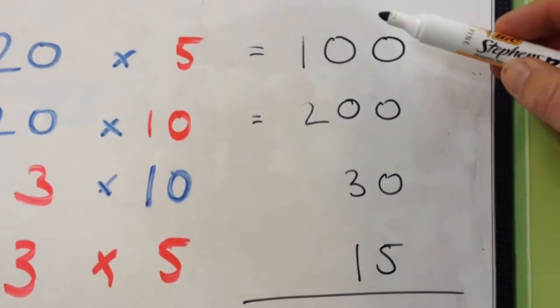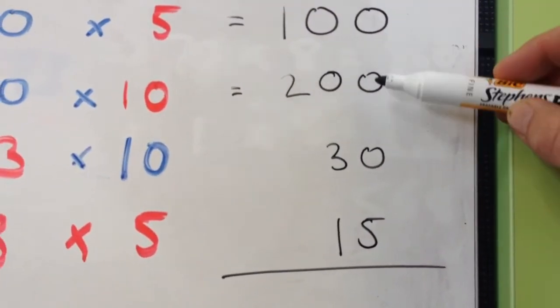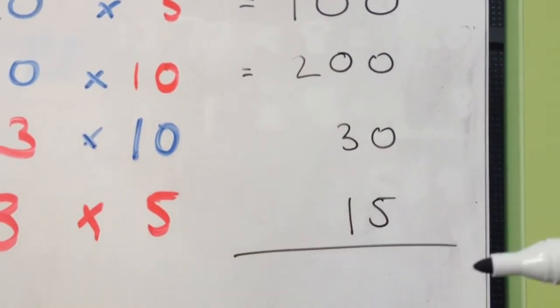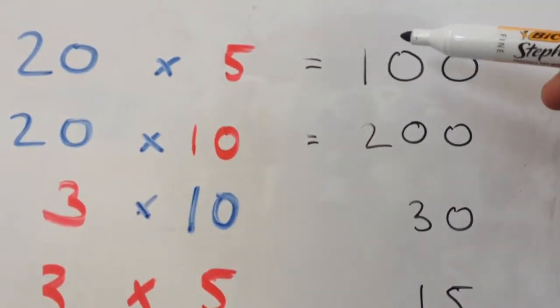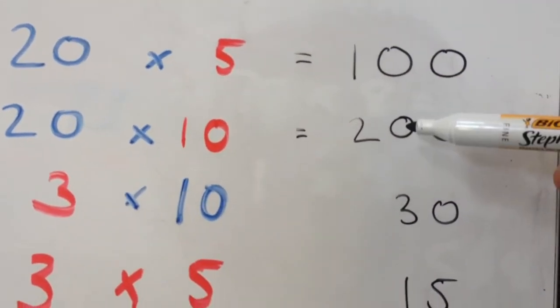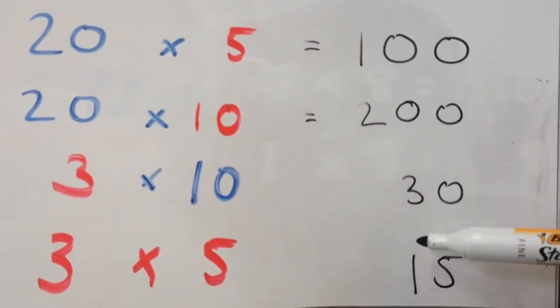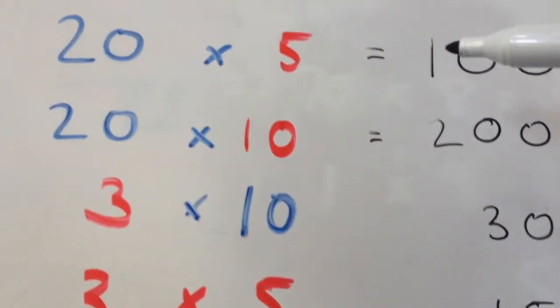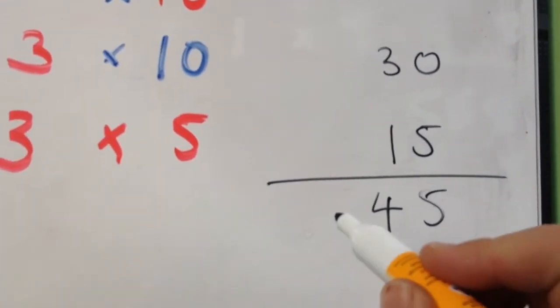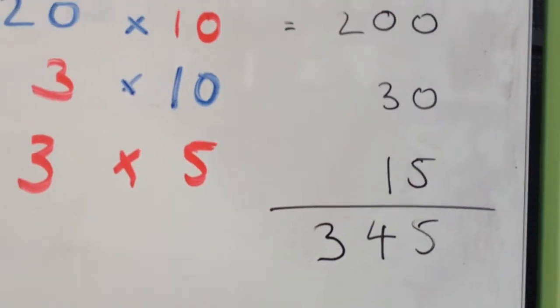Then, of course, we're just going to add all these together, so keeping them in columns. So 0 plus 0 plus 0 plus 5 is 5. Then we go to the next column, our tens column. 0 plus 0 is nothing, plus 3 plus 1, well that's 4. And our final column here, 1 plus 2, well that's 3. So the answer should be 345.